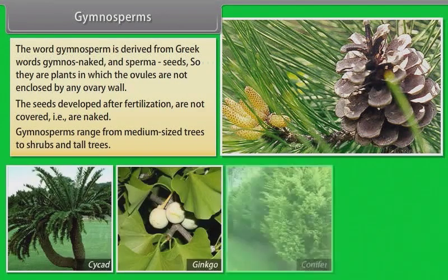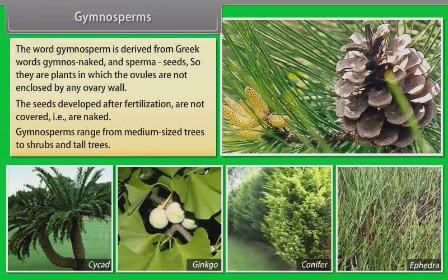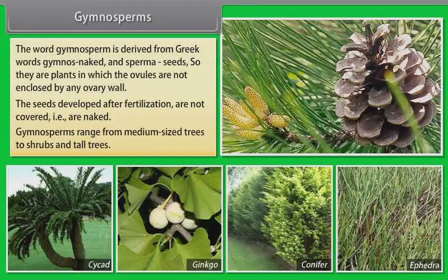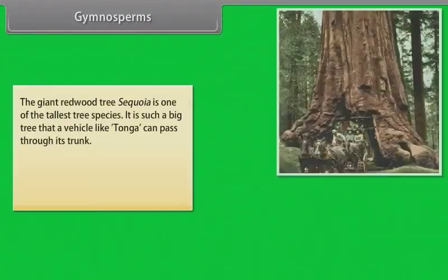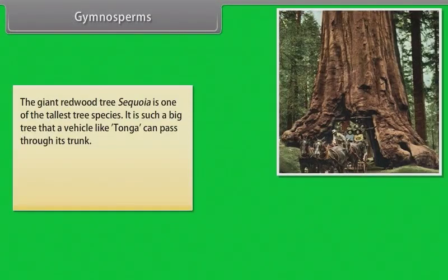Gymnosperms range from medium-sized trees to shrubs and tall trees. The giant redwood tree Sequoia is one of the tallest tree species. It is such a big tree that a vehicle like Tonga can pass through its trunk.